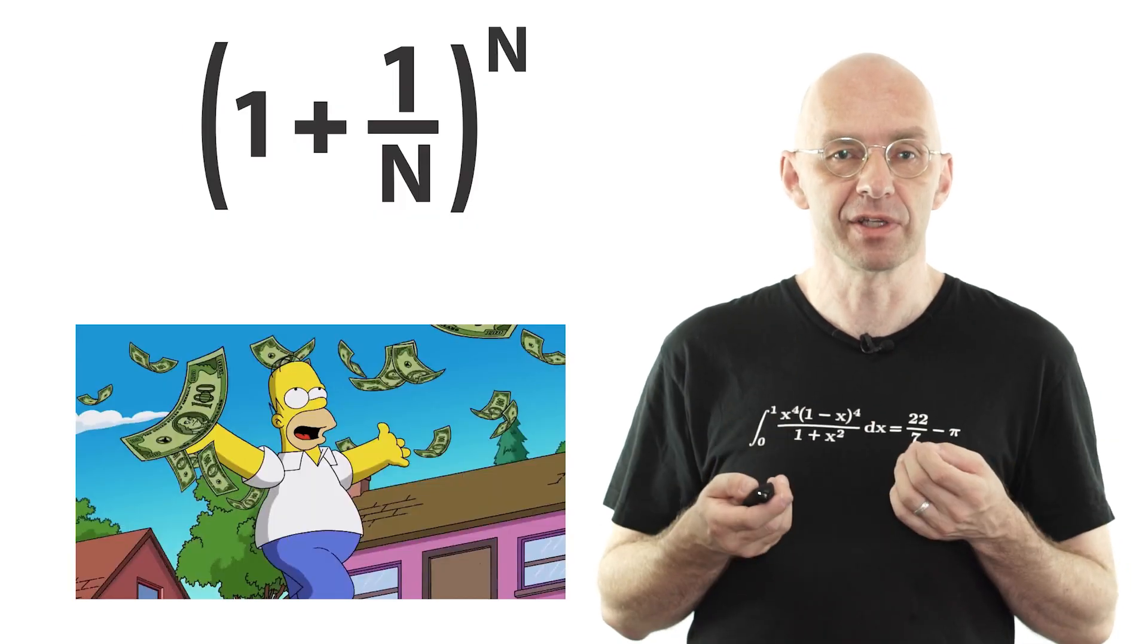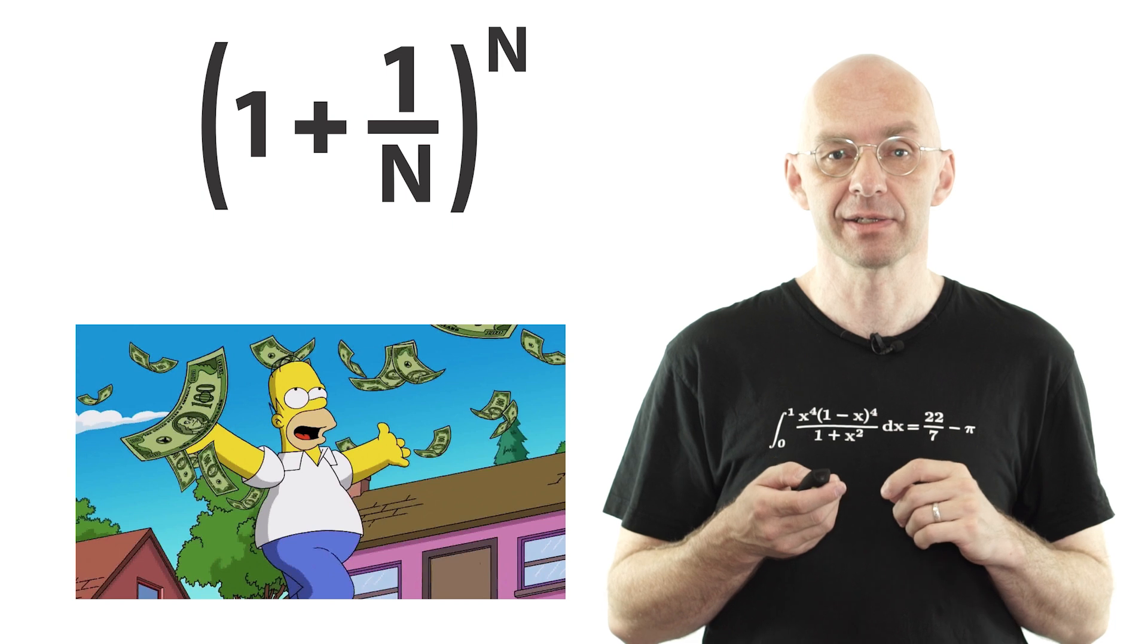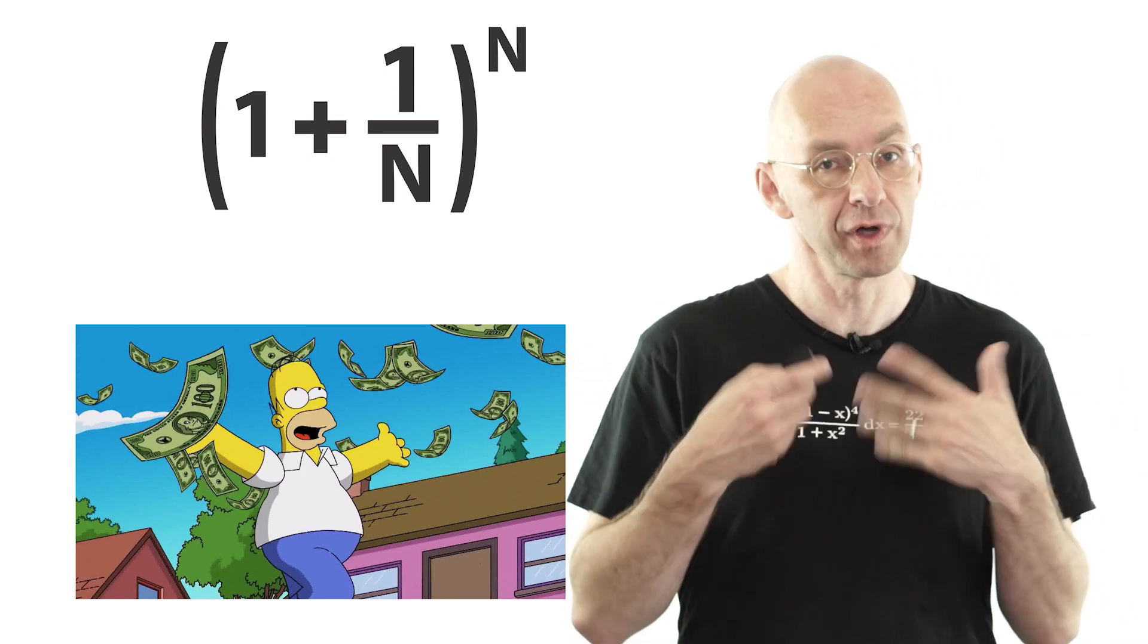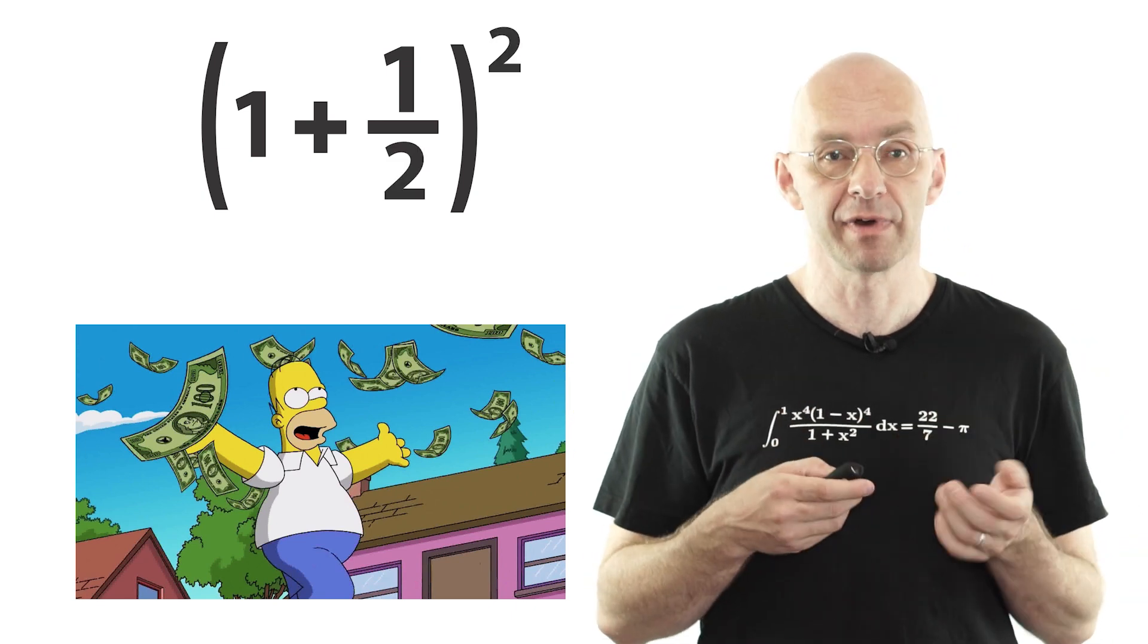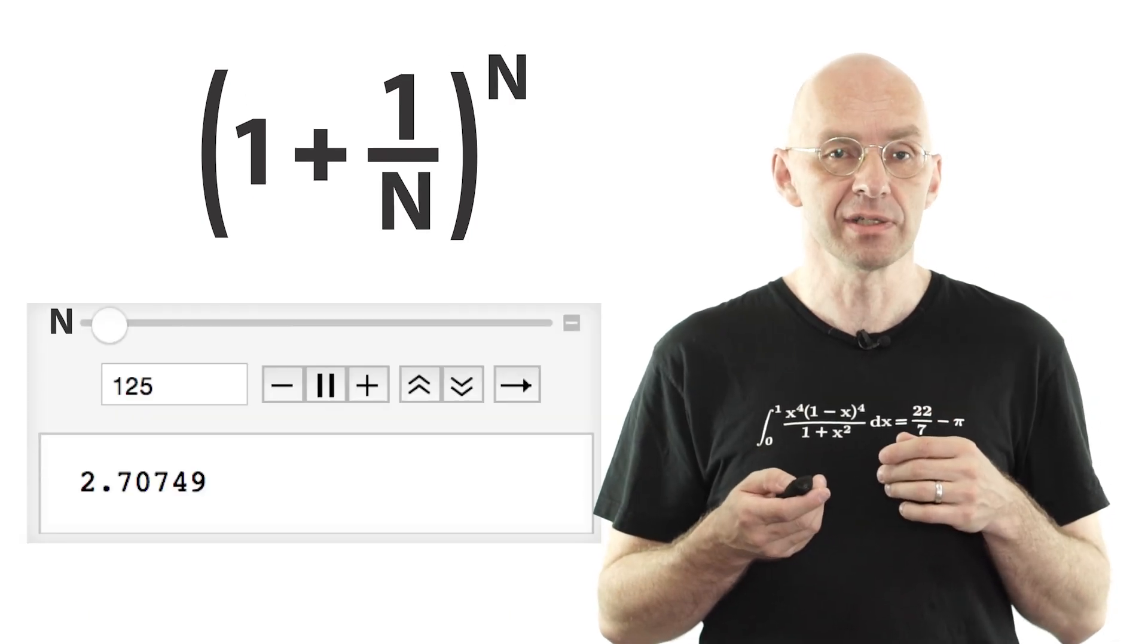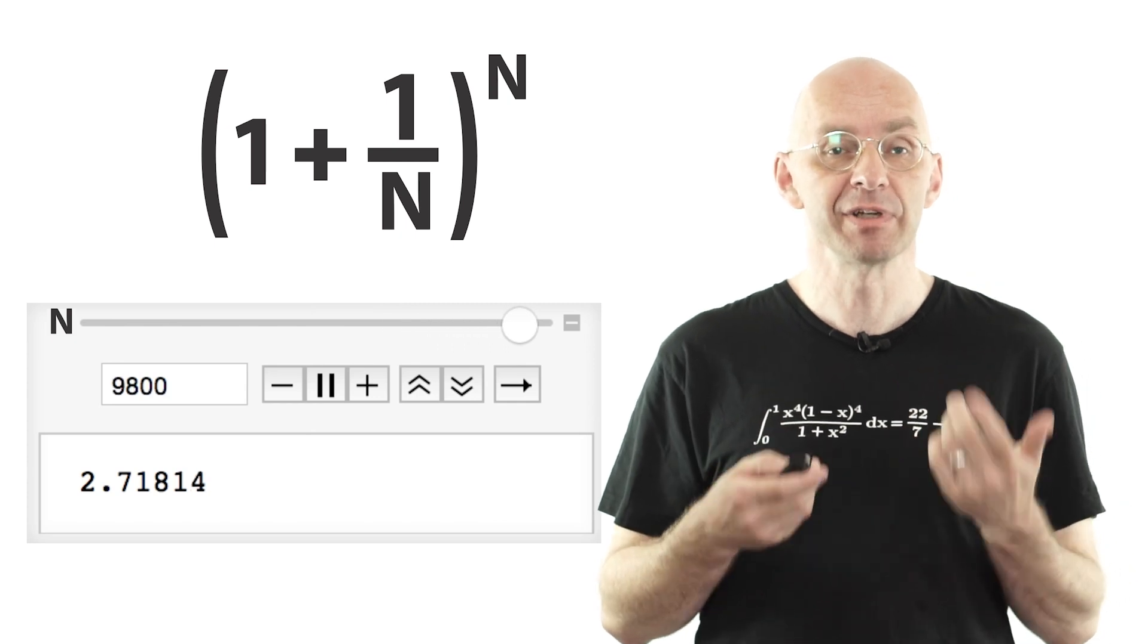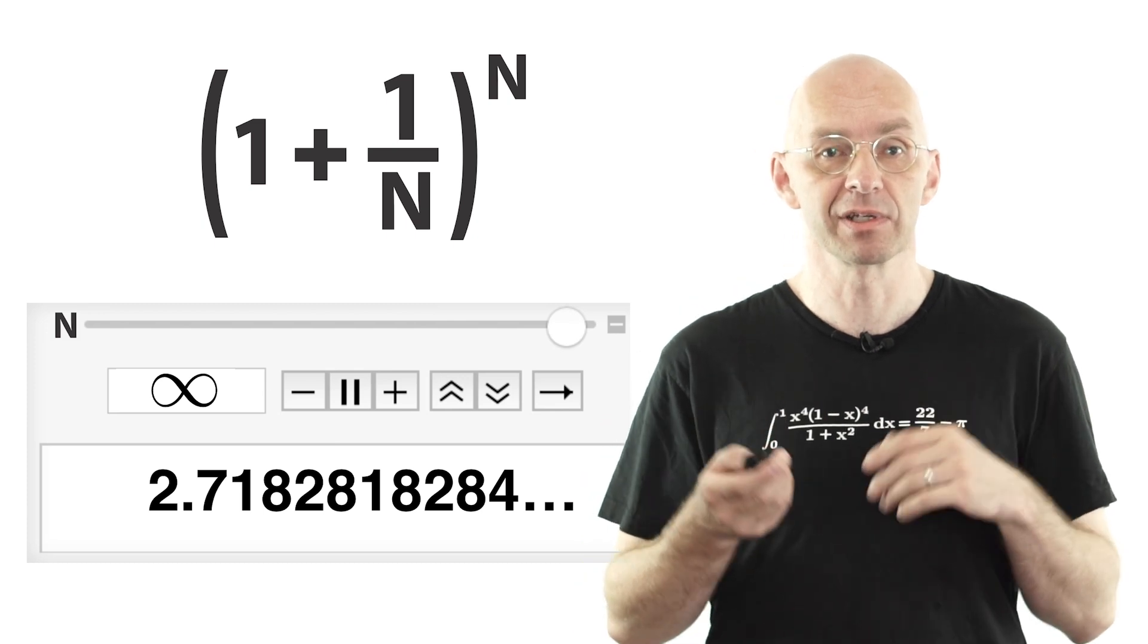In the e to the iπ video I first showed Homer that if he invests one dollar at an interest rate of 100% and compounds the interest n times during one year, he'll have that many dollars at the end of the year. For example if you compound twice you end up with two dollars and twenty-five cents. Now the more often you compound the interest, that is the larger the n, the more money you'll have by the end of the year, but this amount does not grow forever; there's a limiting value. And this limiting value is the number e which is approximately 2.718.